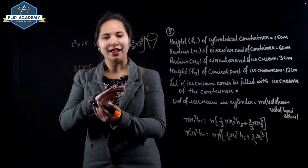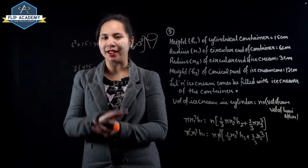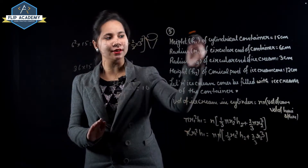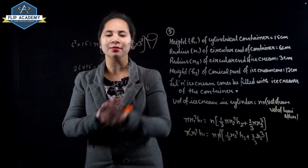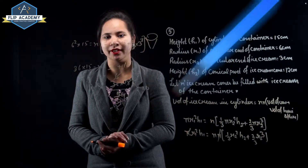So there are 10 ice cream cones that can be filled by this cylindrical container. Question number 5 is complete. Surface area and volume, exercise 13.3, question number 6.